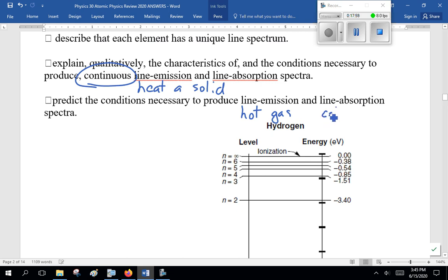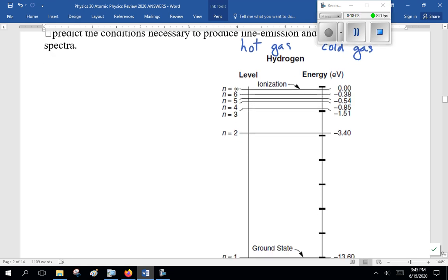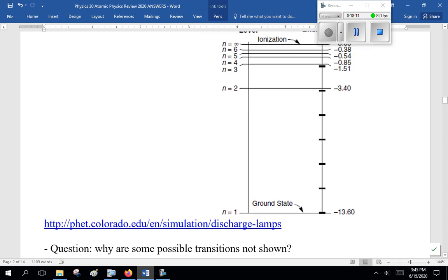Describe that each element has a unique spectrum. Well, since each element has unique energy levels, as it jumps up and down, it releases or emits energy at a certain... Line emission, that's a hot gas, not continuous, but a gas will be a line emission because the atoms of each element will emit certain light. Line absorption is a cold gas.